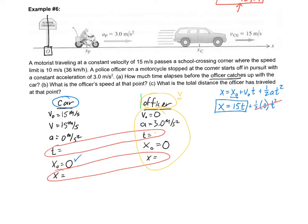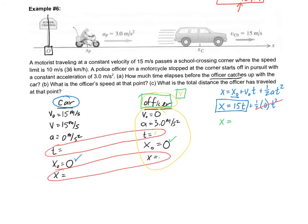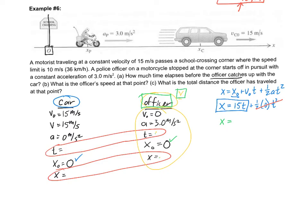Now I'll do the same for the officer, using the same equation so both t and x are included without bringing in final velocity. For the officer: initial position is zero, initial velocity is zero — so that term drops out too. I'm left with: x = ½ × 3.0 × t², which gives me two equations with the same two unknowns.